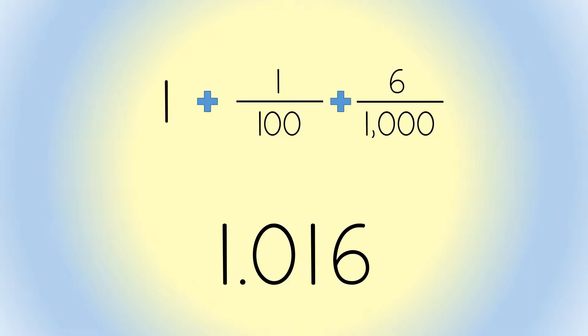The way you read this is 1 and 16 thousandths. Say the whole number first. Say the word AND when you hit the decimal point. And then say the number to the right of the decimal point. Here, it's 16.